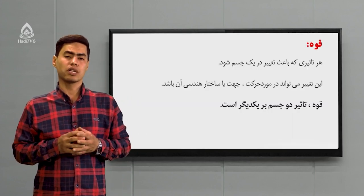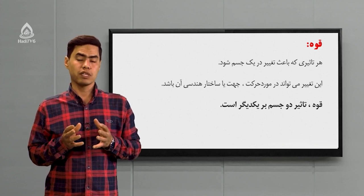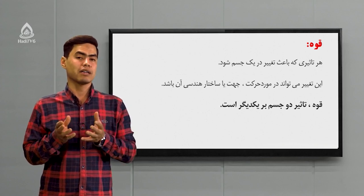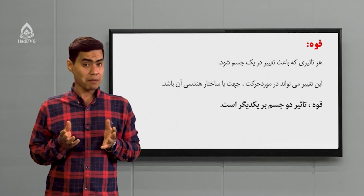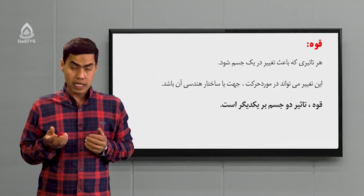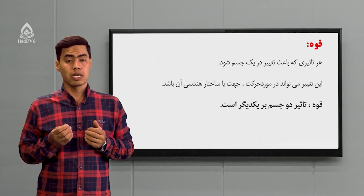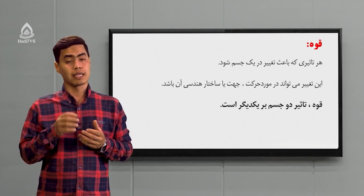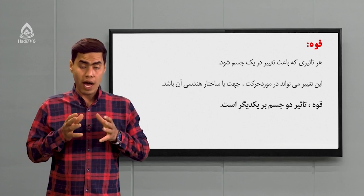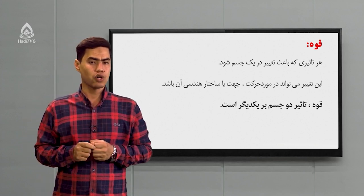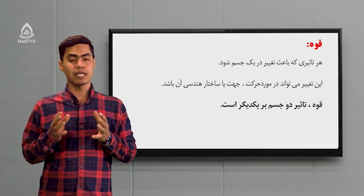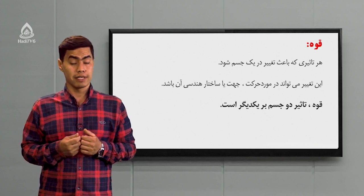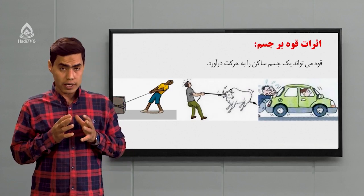شاگرد عزیز، شما از وقتی که خورد بودید و بزرگتر شدید همیشه دوست داشتید که زور و بازوی خودتان و بقیه نشان بدید. حالا قوه را ما چی می‌تونیم تعریف کنیم؟ در فیزیک تعریفش فرق می‌کنه. قوه تأثیری‌ست که باعث تغییر در جسم شد. این تأثیر می‌تونه در حرکت جسم، در جهت جسم، یا در ساختار هندسی شکل باشه. می‌تونیم یک تعریف کلی بگیم که قوه تأثیر دو جسم بر یکدیگره. یادت باشه وقتی از قوه صحبت می‌کنیم حداقل دو جسم باید داشته باشیم.